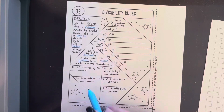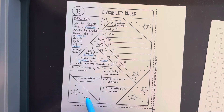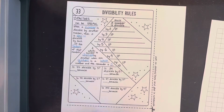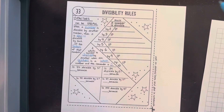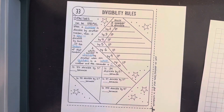Remember, every number can be divided by one — every number has a factor of one. That's why one is not included on this list, because every number is divisible by one, and when you're dividing by one, you get the same answer. So let's go through the rules now.